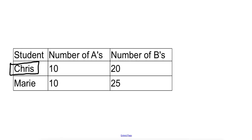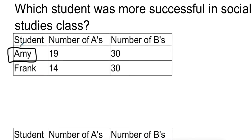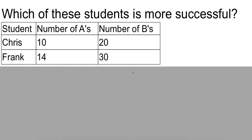Now in our next example, we're going to be comparing Chris and our student from our last example, Frank, to see which of these two students is more successful in class. Now the trouble we run into here is we can see that the number of A's and the number of B's they have is different for both of these students. Chris has 10 A's and 20 B's. Frank has 14 A's and 30 B's. So we have to find a way to accurately portray what students faring better in class.